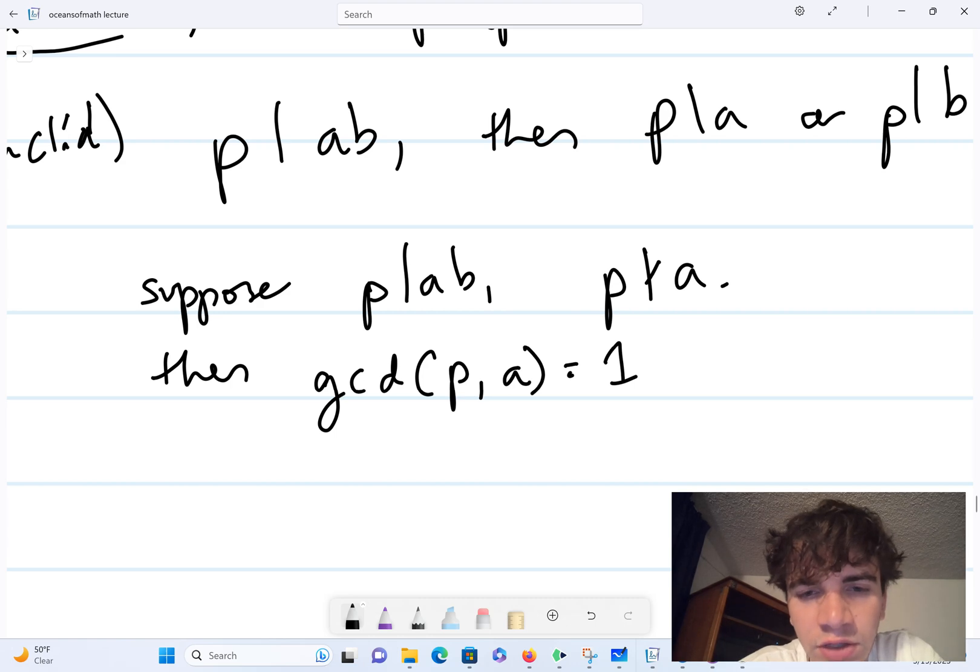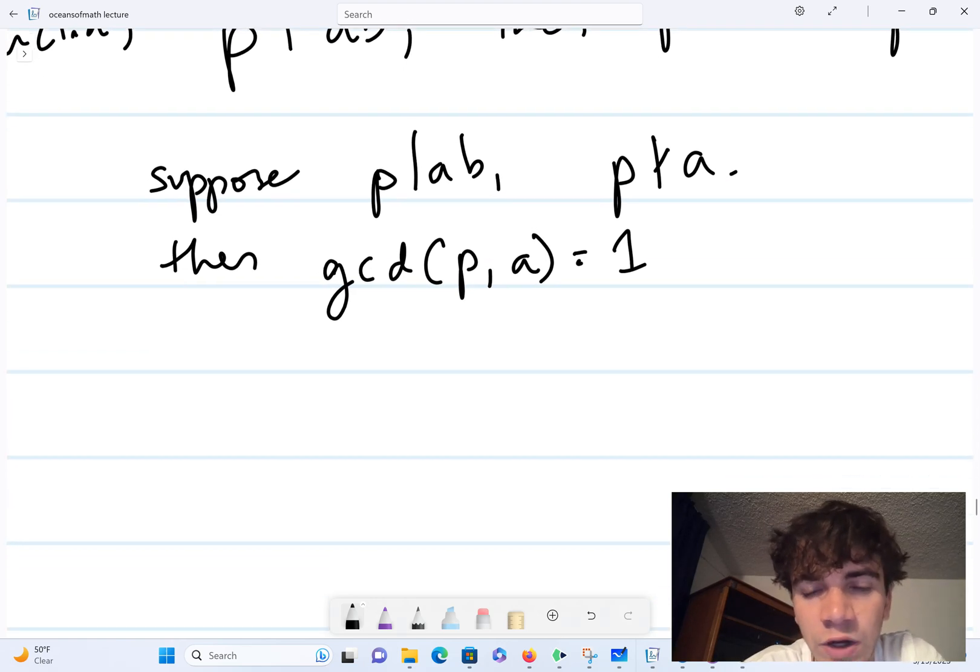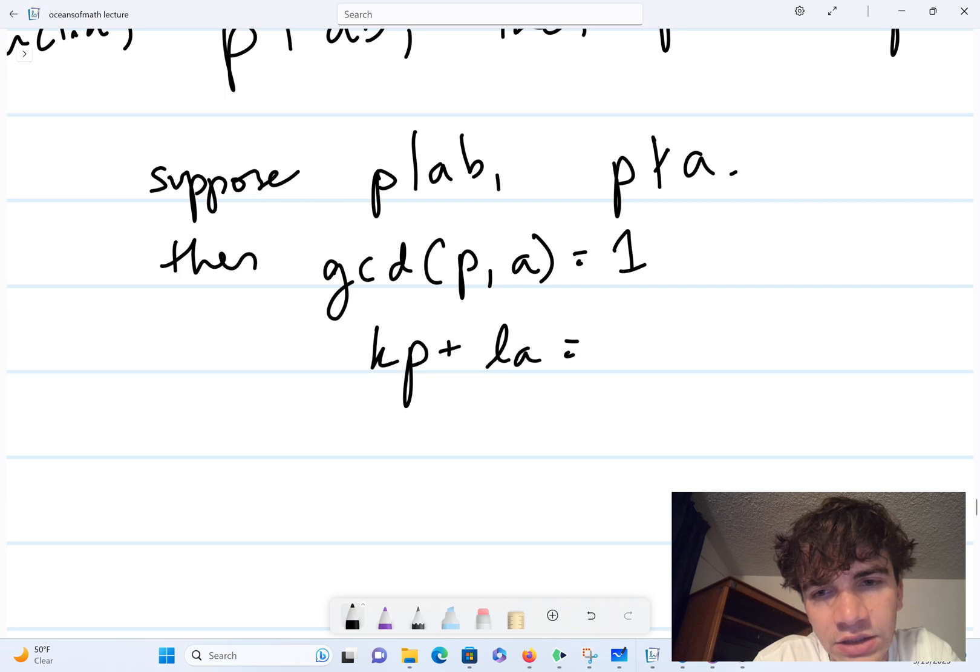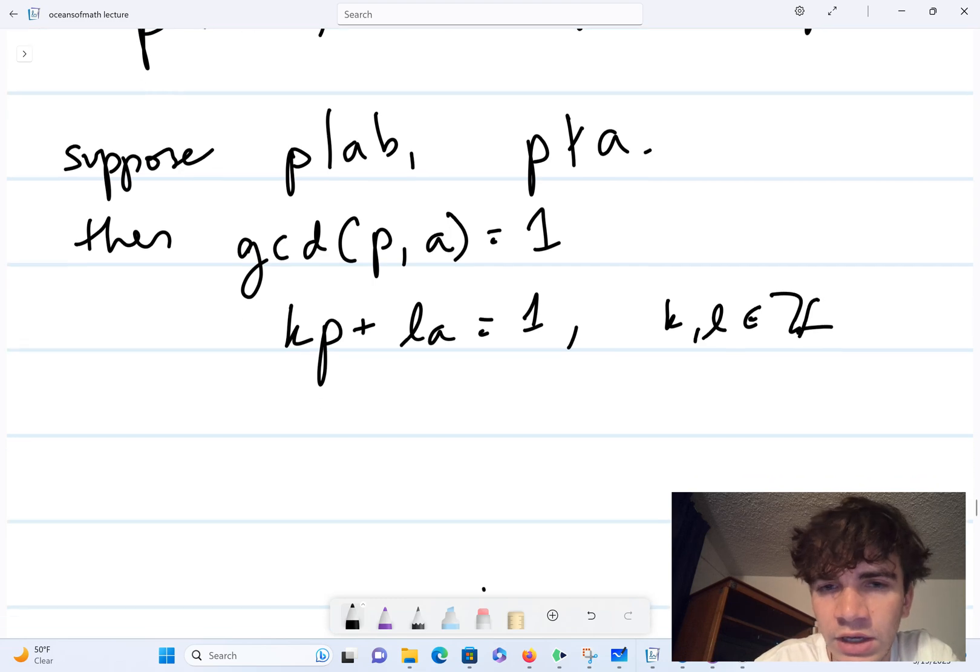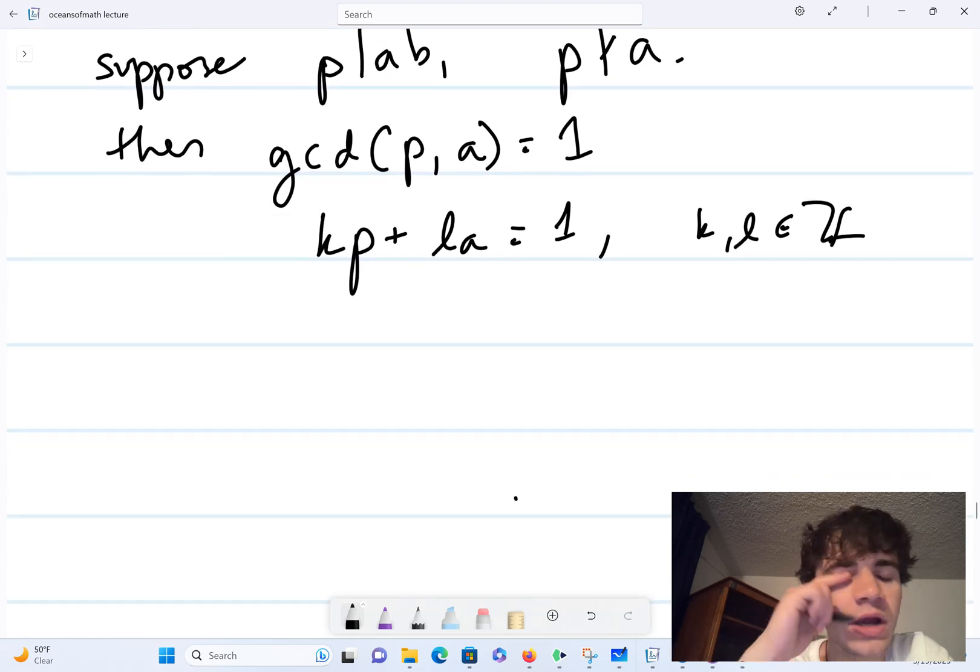Because the only divisors of p are one and itself, and if the gcd of p and a were p, then p would divide a. So thus the gcd of p and a is one, and so we can find a solution to the equation kp plus la is equal to one, where k and l are integers.